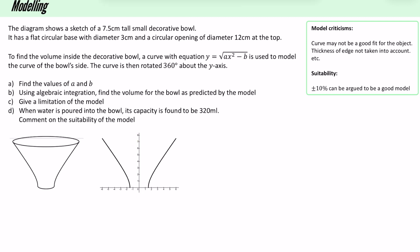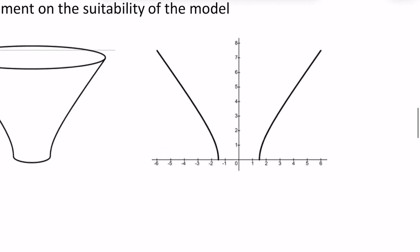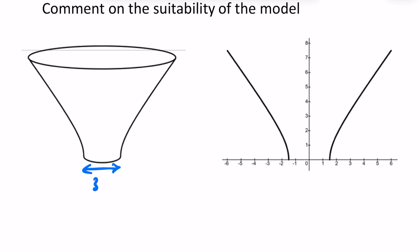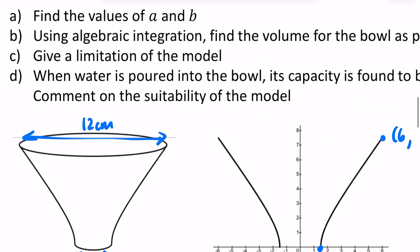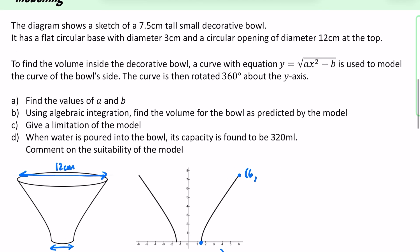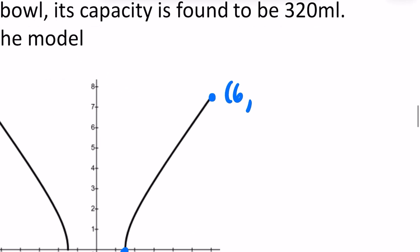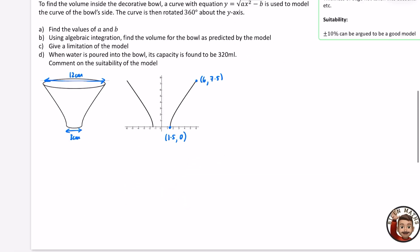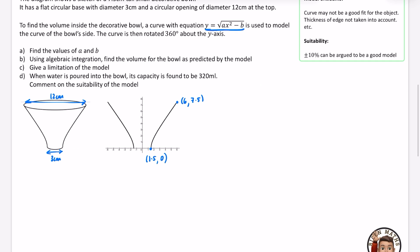We're going to start off by finding the values of a and b. We have two unknowns so we need two coordinates. The diameter at the base is 3 cm, so the x-coordinate at the bottom is 1.5 with a y-coordinate of 0. The top opening has diameter 12 cm, so that coordinate has x = 6. The height is 7.5 cm, so y = 7.5. So our two coordinates are (1.5, 0) and (6, 7.5).